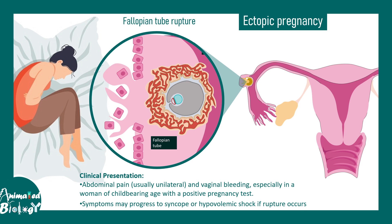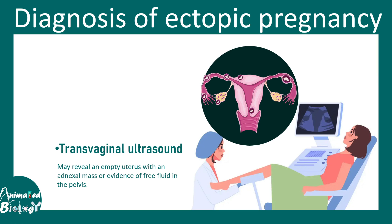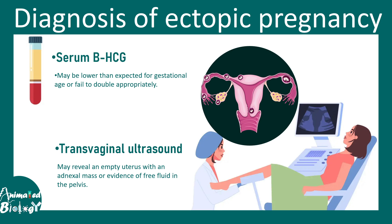Diagnosis is generally made via transvaginal ultrasound — if implantation is at an ectopic site, this can be identified on the ultrasound report. Serum beta-HCG level is another useful biomarker; a lower-than-expected HCG level for the gestational age is indicative of ectopic pregnancy.